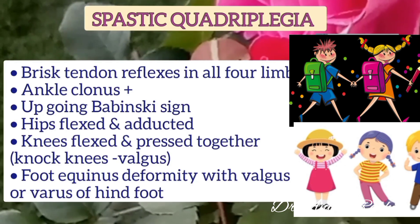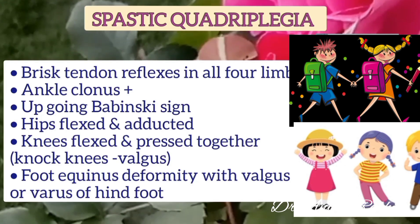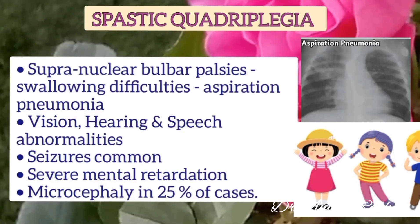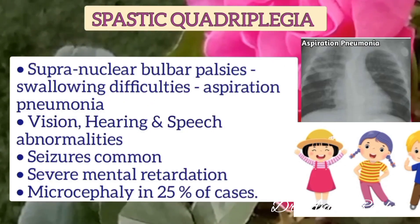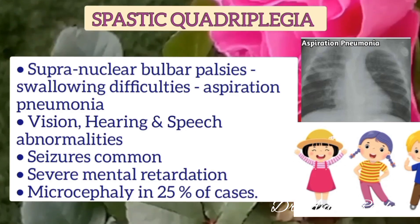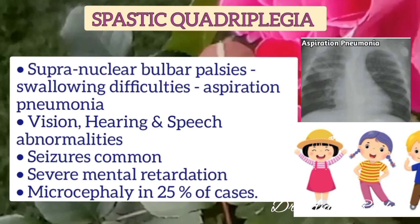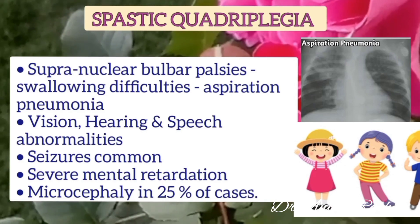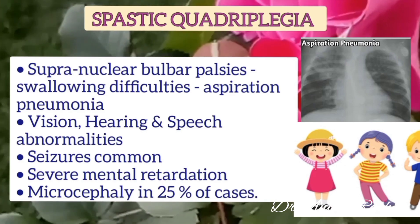In spastic quadriplegia, there is equinus deformity of the foot with valgus or varus of the hindfoot. Brisk tendon reflexes in all four limbs, ankle clonus, and upgoing Babinski sign are present. Supranuclear bulbar palsy can lead to swallowing difficulties and aspiration pneumonia. Vision, hearing, and speech abnormalities are present. Seizures are common, there is severe mental retardation, and microcephaly is present in 25% of cases.